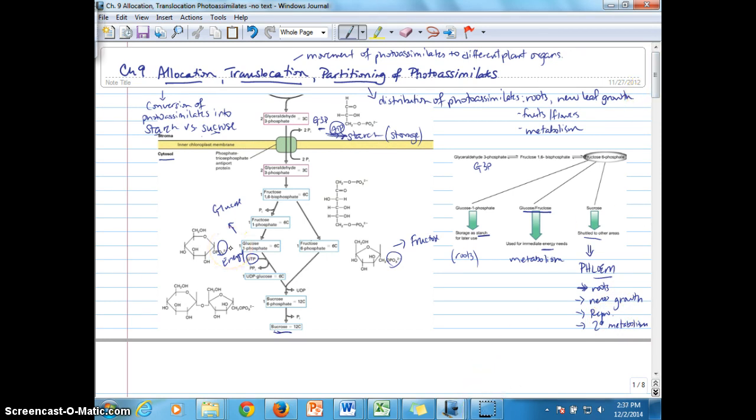So allocation to starch versus sucrose is always in competition, depending on the plant's need. The plant's need is determined by the partitioning pressure for different places to partition the carbon that is just synthesized. And again, translocation is getting those photo-assimilates to those different areas for the plant to partition them.